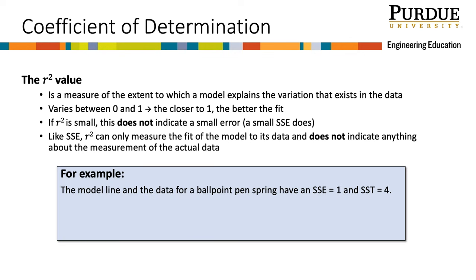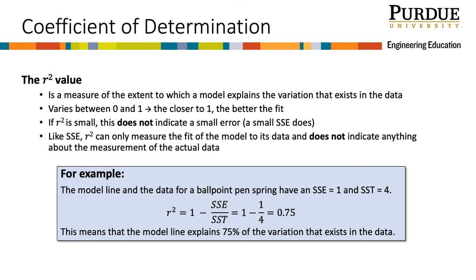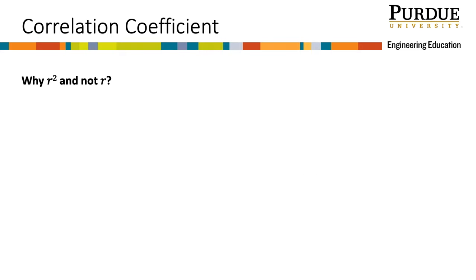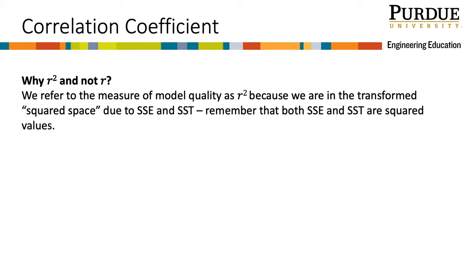Let's go back to our example. For our ballpoint pen spring being tested, the engineer has calculated the SSE to be 1 and the SST to be 4. The R squared value is calculated using 1 minus SSE over SST. So we plug in our values of SSE and SST, and the result is 0.75. This means that the model line explains 75% of the variation that exists in the data — that's a fairly good fit. At this point you might be asking yourself, why R squared and not R? The reason is that we are in the squared space due to SSE and SST being squared values.